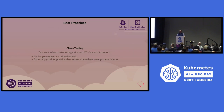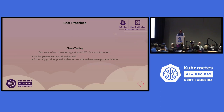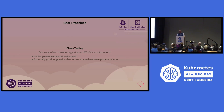Chaos testing — the best way to learn how to support your HPC cluster is to break it, regardless of Kubernetes or anything else. Tabletop exercises also play a critical role here. We can have everything written down, but once you're in the thick of an incident trying to restore a cluster, having that muscle memory — having done this before — creates a lot more psychological safety. You actually perform a lot better under that stress.